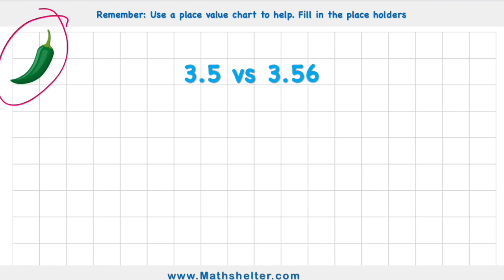We're going to start today with a green chilli challenge and we have 3.5 versus 3.56.